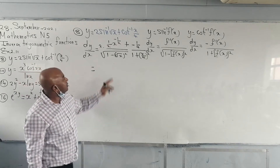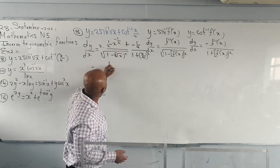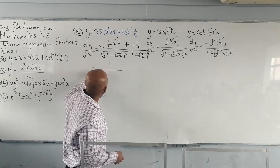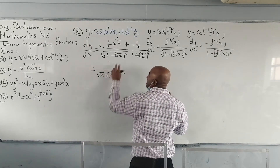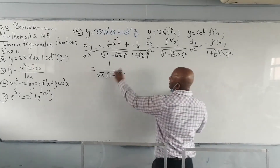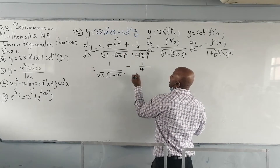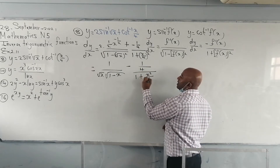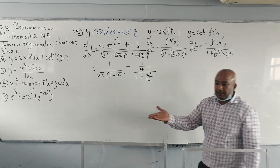Now let's simplify. 2 times 1 over 2 — that's positive 1. x to the power minus half I can take to the denominator, it will become x to the power positive half, which is just the square root of x. That's the square root of 1 minus the square root of x all squared, which is just 1 minus x. Positive times negative is a negative, so we have minus 1 over 4, and 1 plus x squared over 16. In the exam, that's fine as it is. Textbook final answer — let me just double check.